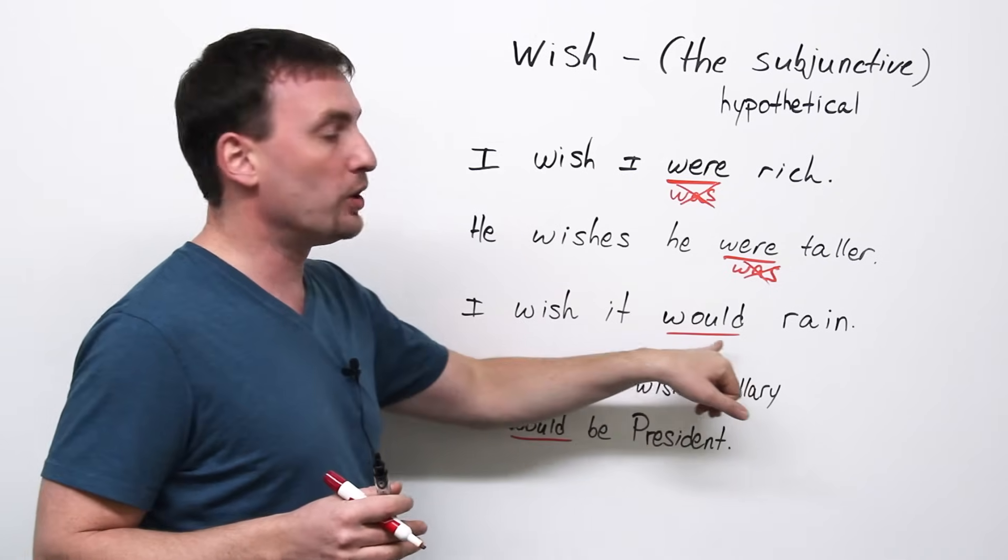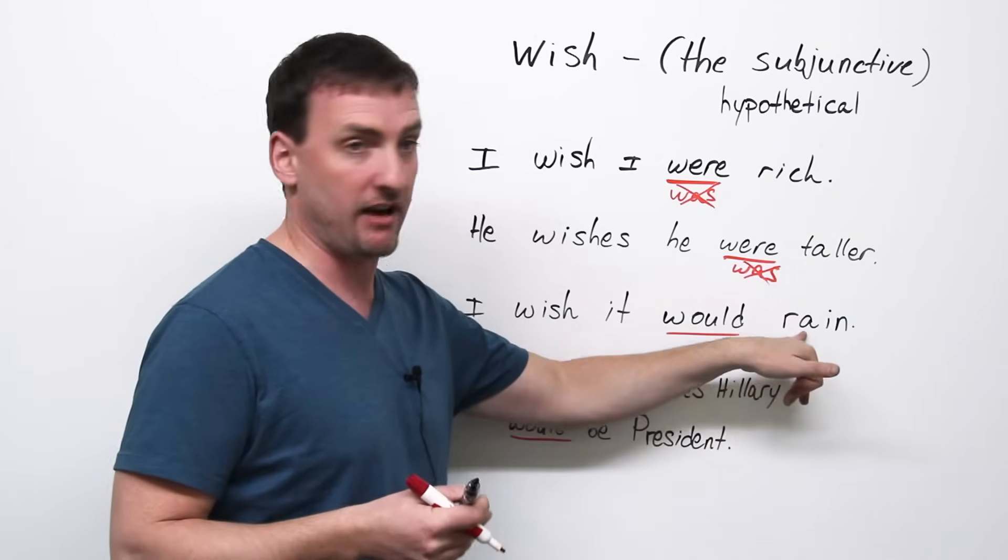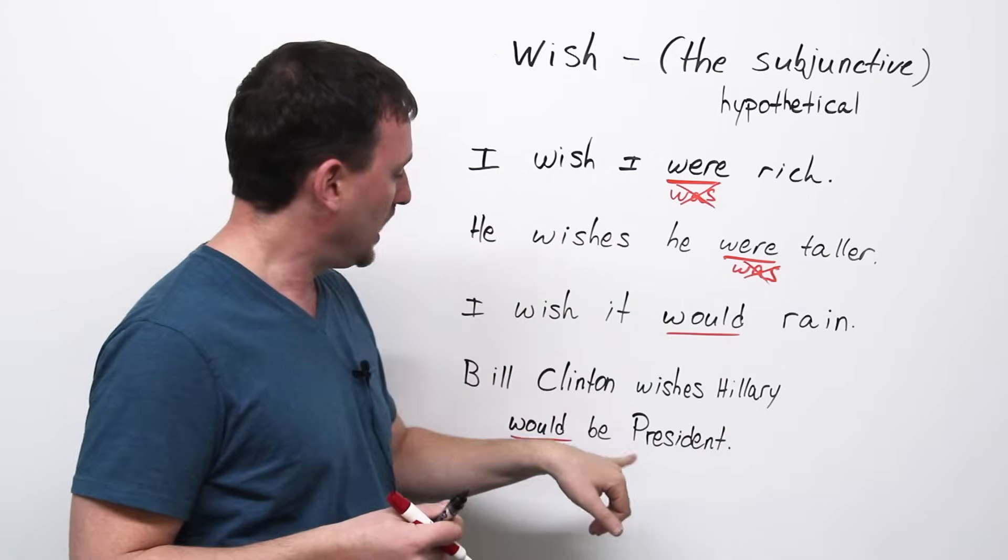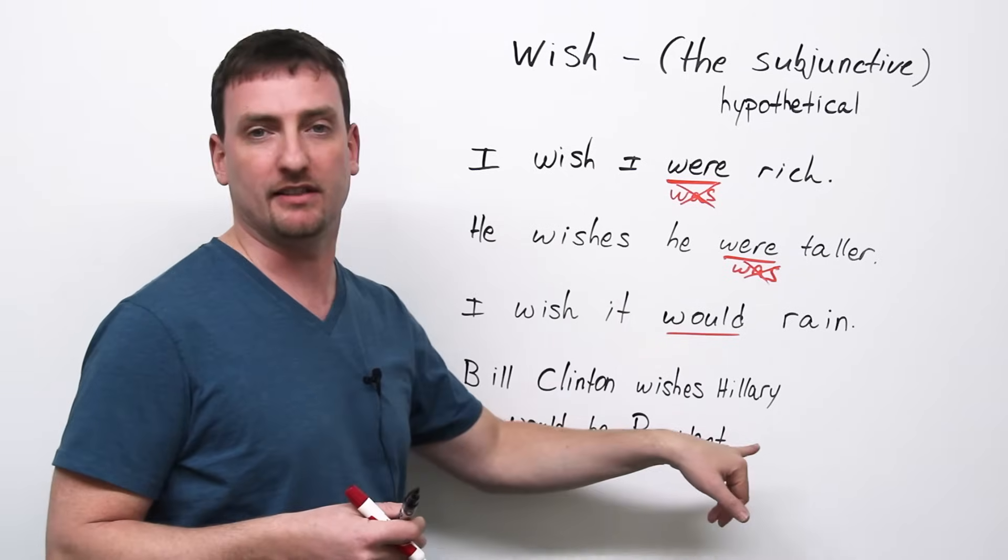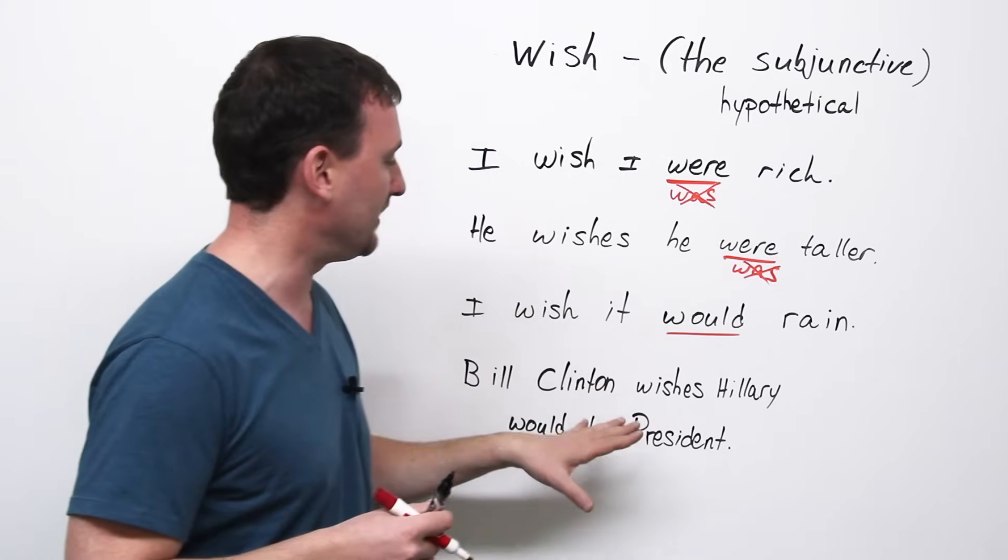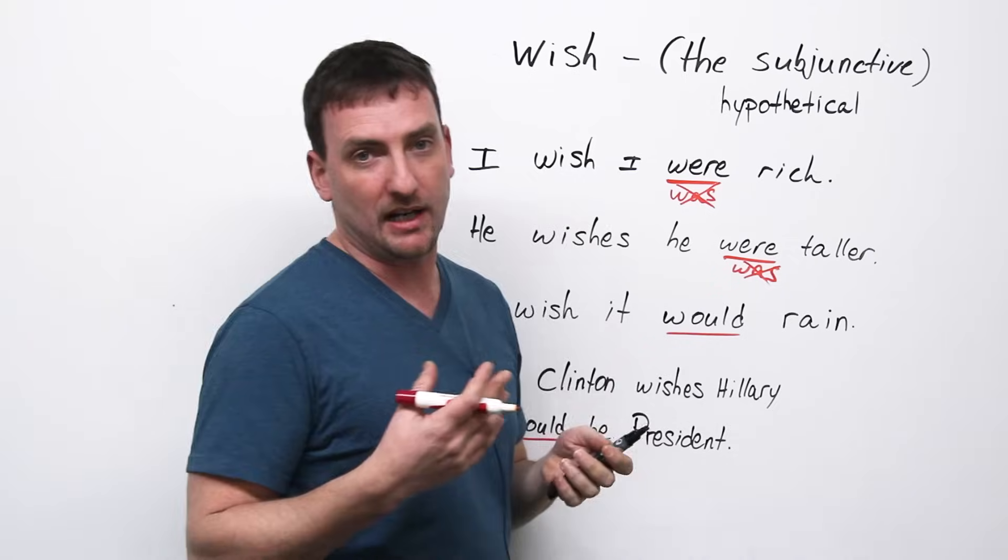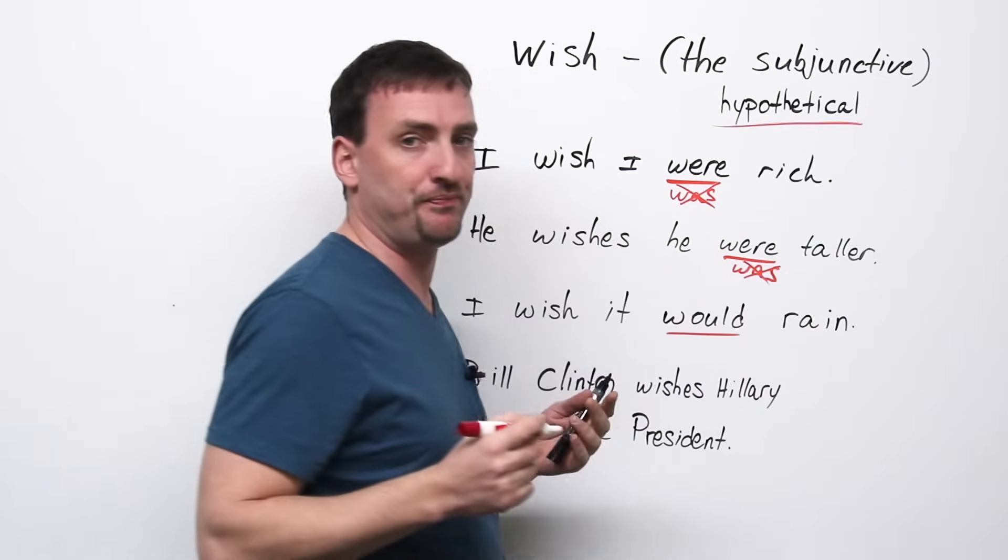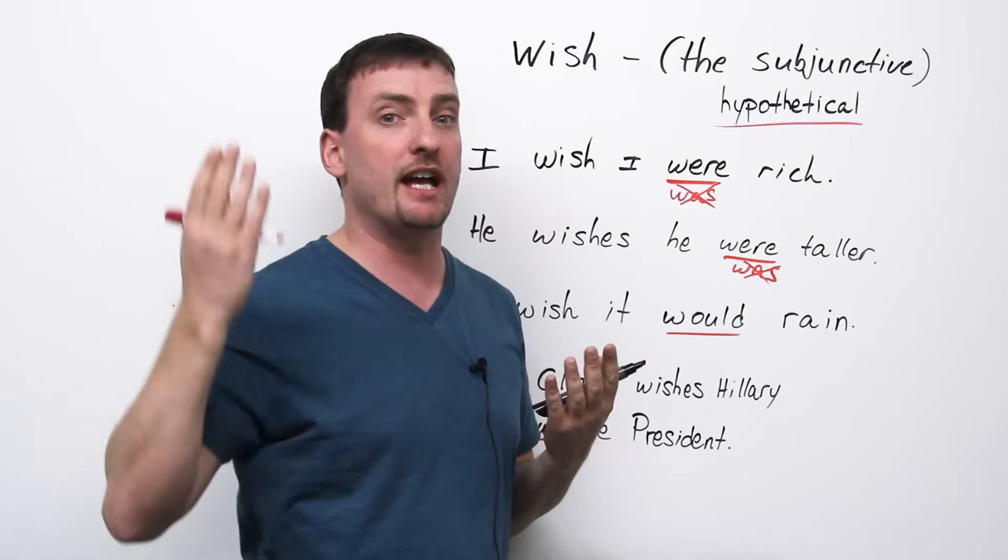I wish it would rain. Now, here, we're talking about an action verb, rain, like to come down, rain. So, we use would. Bill Clinton wishes Hillary would be president. Notice the capital P, because president is a title here, specific. So, this is called the subjunctive voice. What we are talking about when we use the verb wish is a hypothetical. What does hypothetical mean?